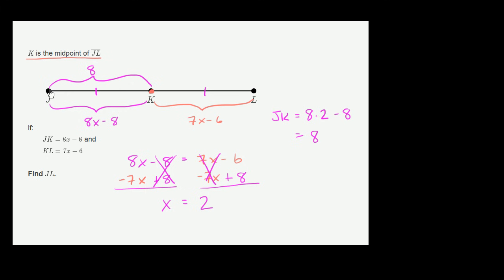And if we wanted to figure out JL, we know that this is halfway, so that this must be 8 as well. And the length of the entire thing, the length of JL, must be 16.